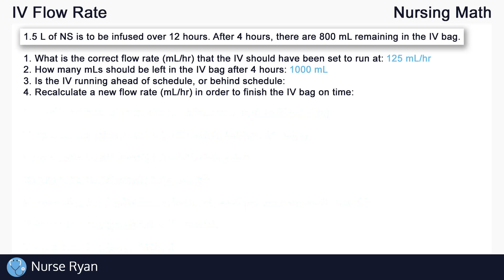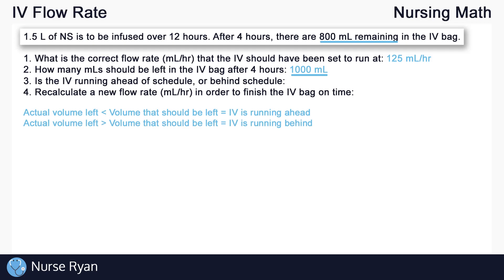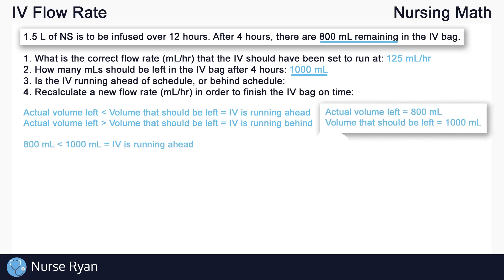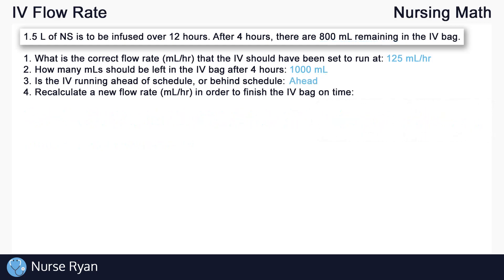Question number 3 asks: is the IV running ahead of schedule or behind schedule? We know from the question that after four hours, there are 800 mils remaining in the IV bag. But we found in question 2 that there should have been 1,000 mils remaining. The IV is therefore running ahead of schedule. As a rule: if the actual volume left is less than the volume that should be left, the IV is running ahead. If the actual volume left is more, the IV is running behind. Here, 800 mils is less than 1,000 mils, so the IV is running ahead of schedule.